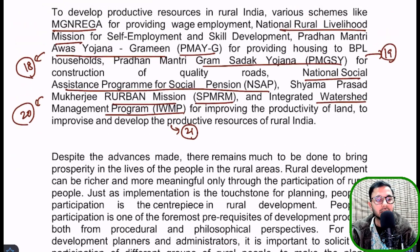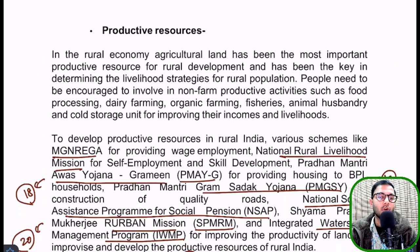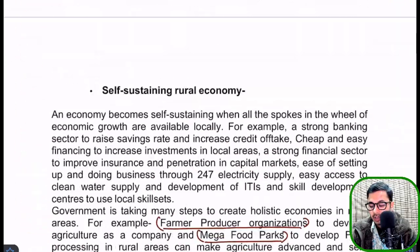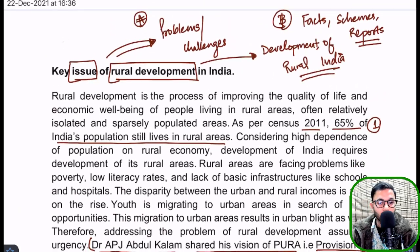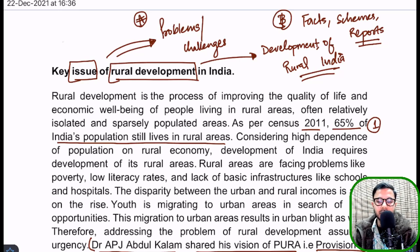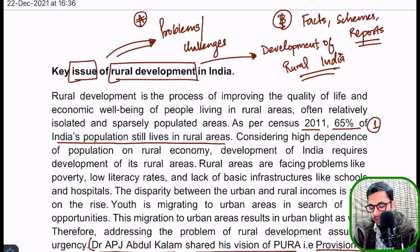Point twenty: National Social Assistance Program for social pension, Shyama Prasad Mukherji Rurban Mission. Point twenty-one: Integrated Watershed Management Program. We have written 21 facts — if you write even 10 of these before your exam and integrate them into your essay, you can see what a big difference it will make compared to your peers. Task B is complete — identifying facts, schemes, and reports. Now Task C: identify the body points.